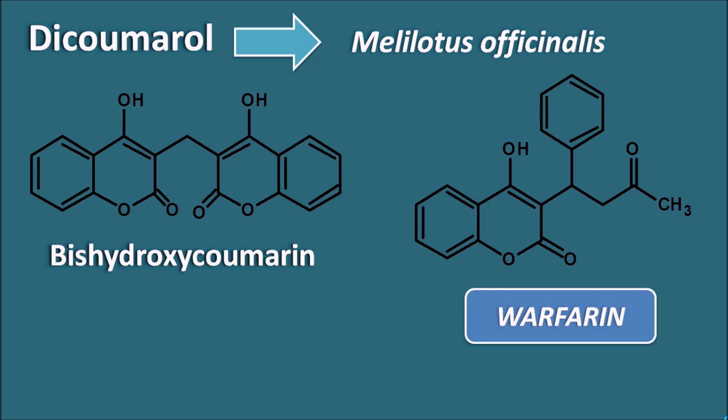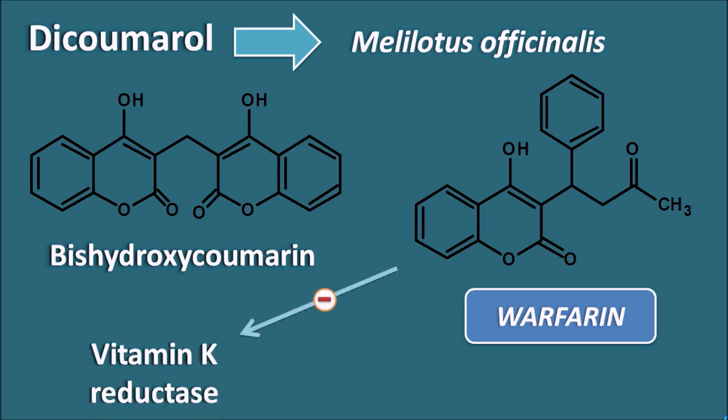How does warfarin act? Warfarin acts as a vitamin K antagonist and inhibits the vitamin K reductase enzyme. This enzyme is very important for the recycling of vitamin K. When this enzyme is inhibited, vitamin K epoxide cannot be reduced, so the recycling of vitamin K is inhibited.